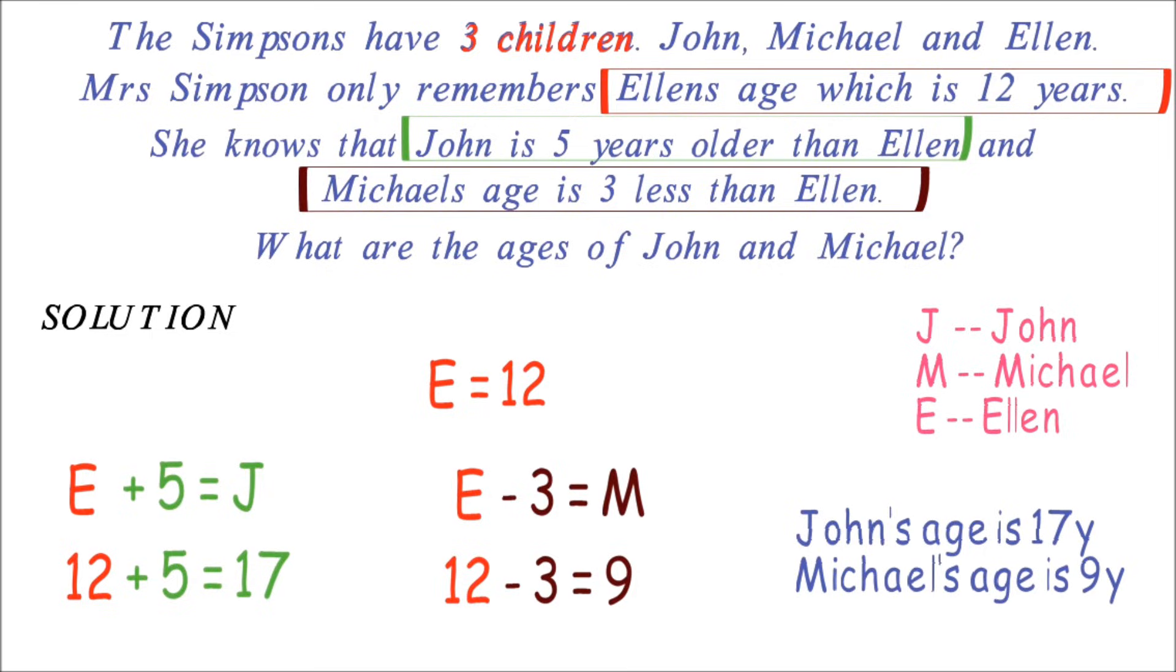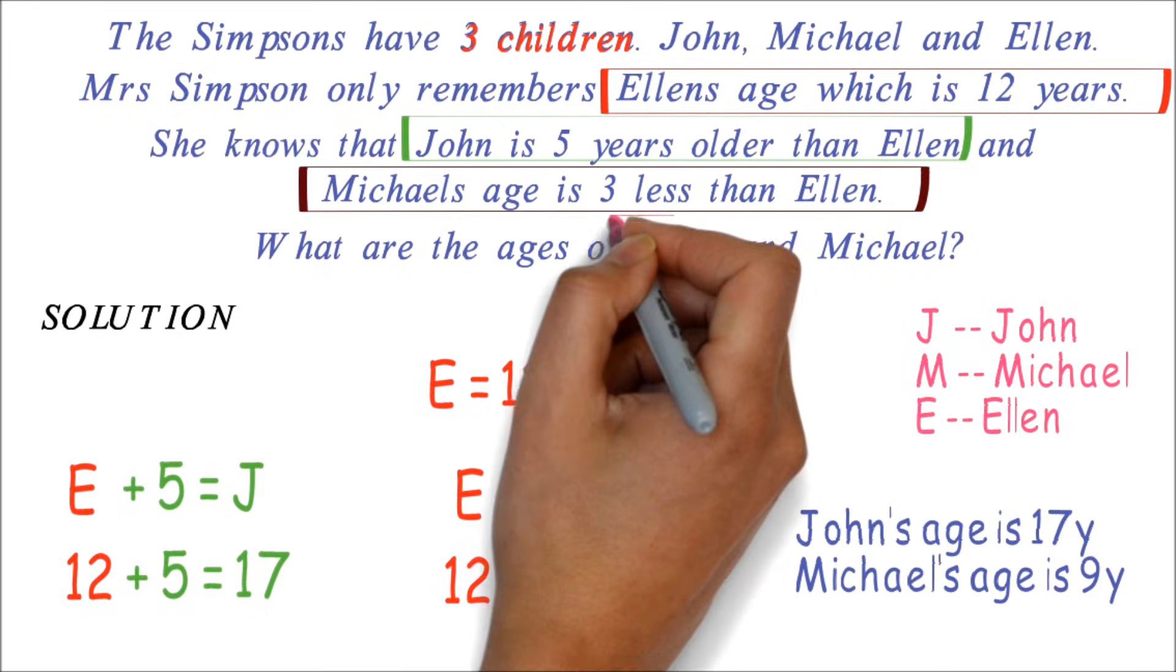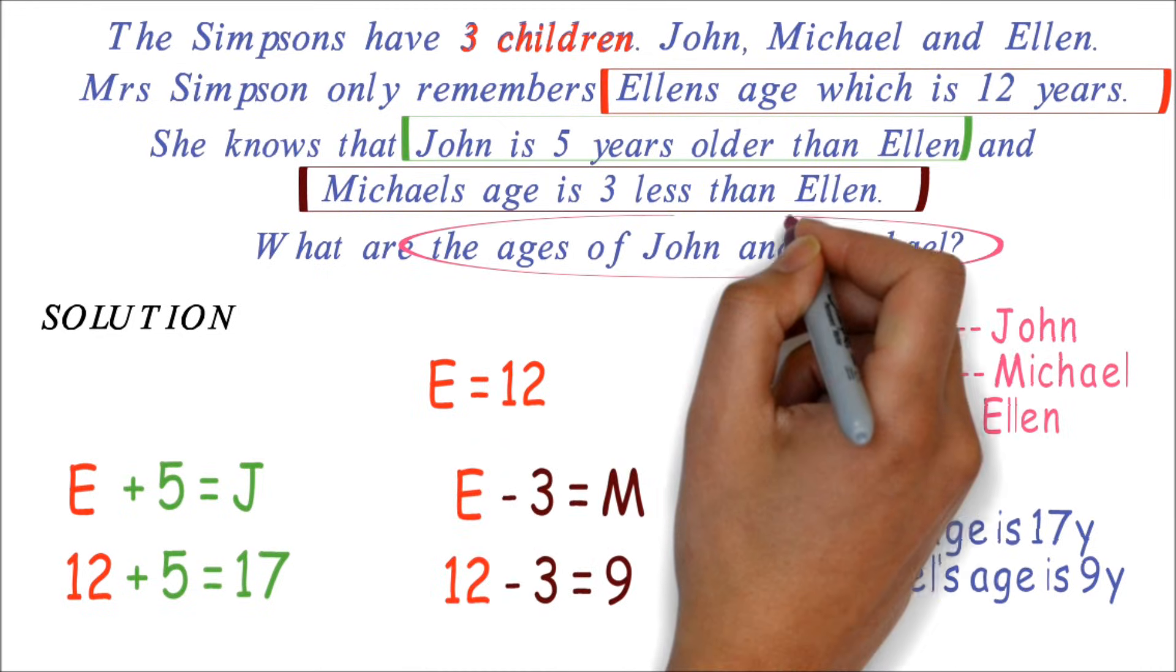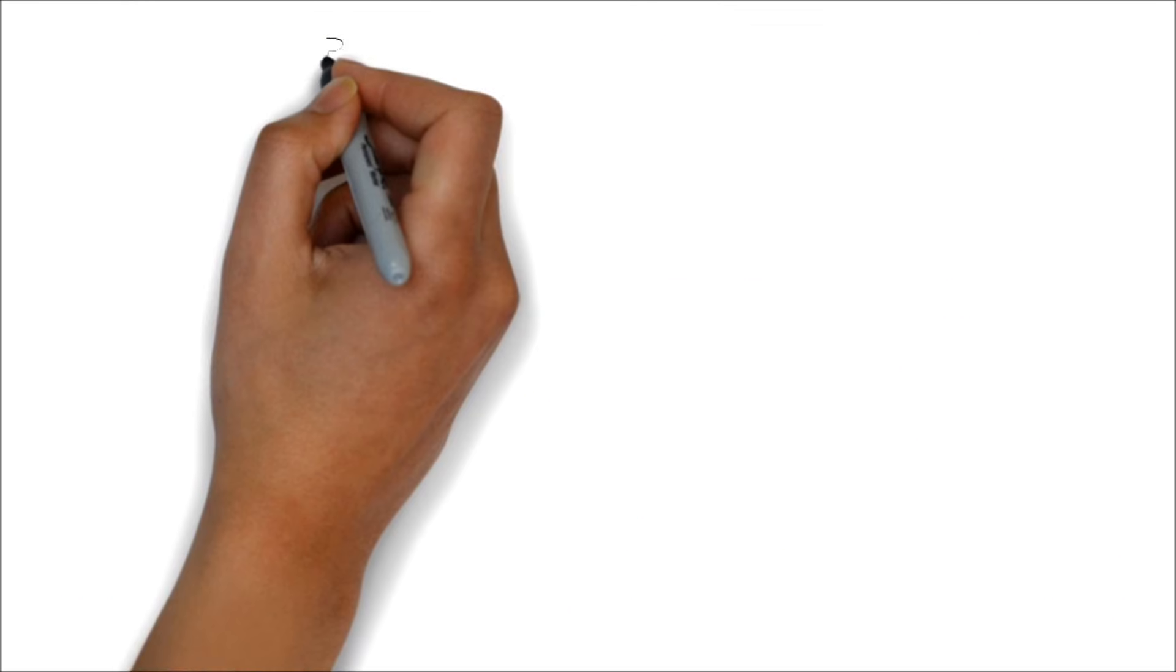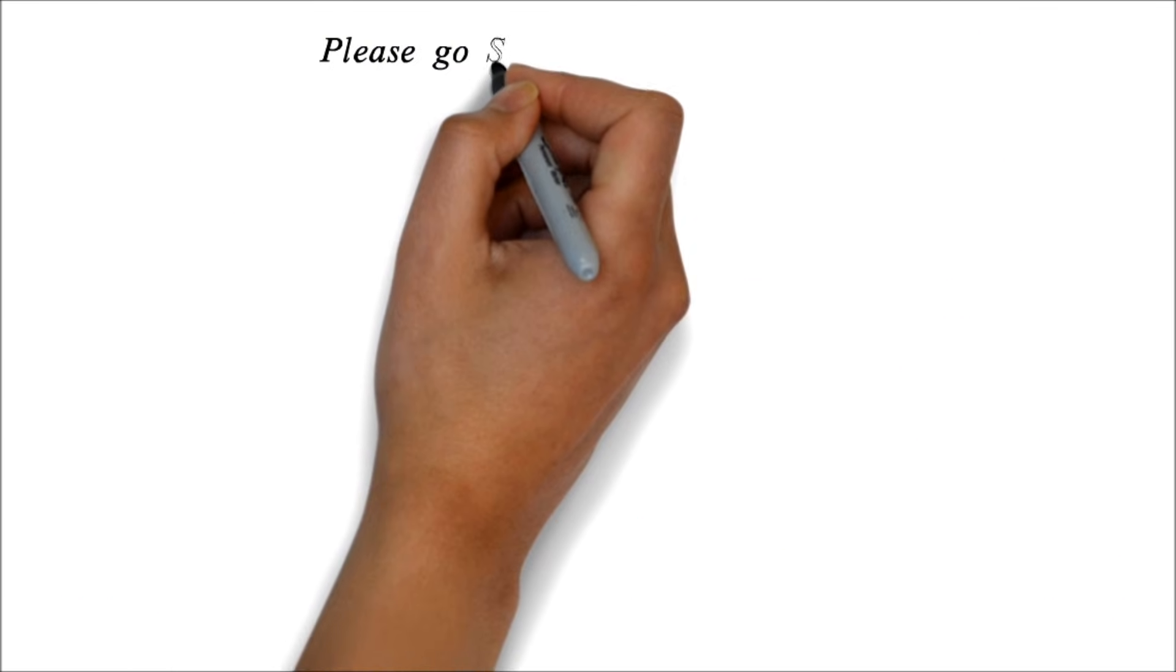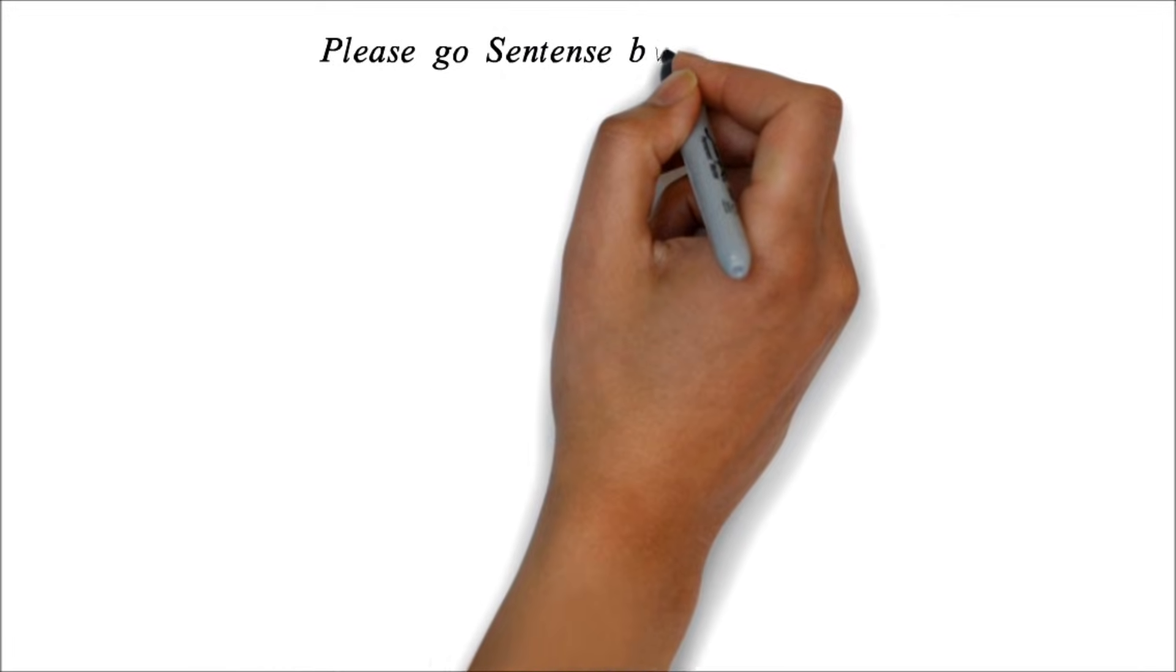Please pay extra attention to what the problem is asking for. Here, the question is about the age of John and Michael. There can be so many twists to this problem. But if you just follow and write down what is going on sentence by sentence, you will not miss the correct answers.